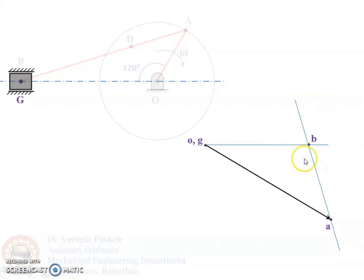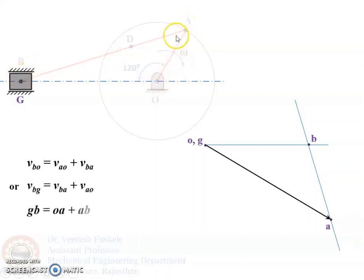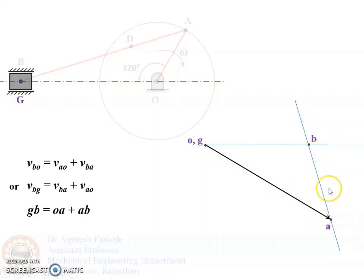To mark the sense of the vectors, we write the vector equation. The velocity of B relative to G equals the velocity of A relative to O plus the velocity of B relative to A. In vector form: GB = OA + AB. The sense and direction of the vectors follow accordingly, so OA plus AB gives GB.